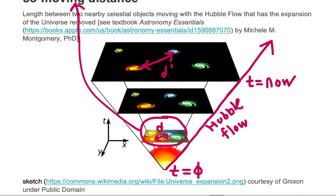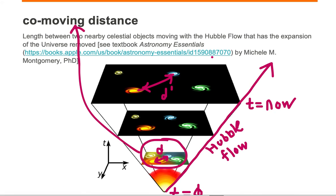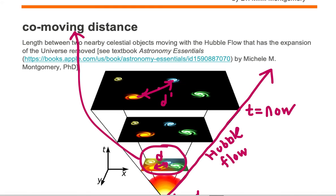The co-moving distance is constant. We remove the Hubble expansion between the galaxies, and the galaxies should remain the same distance apart once you remove the Hubble flow, so long as the galaxies are not gravitationally bound together.